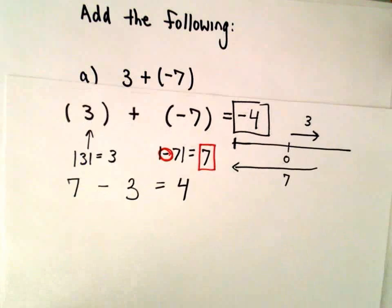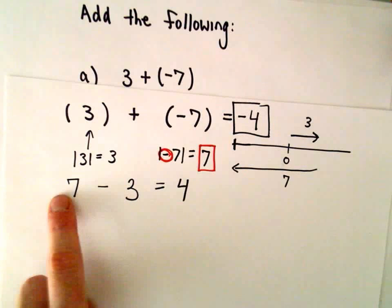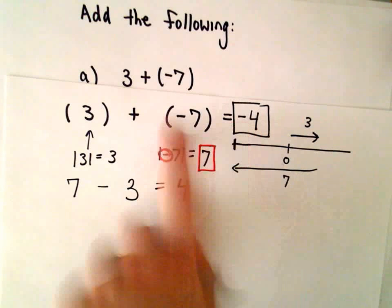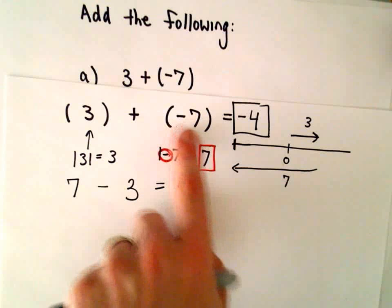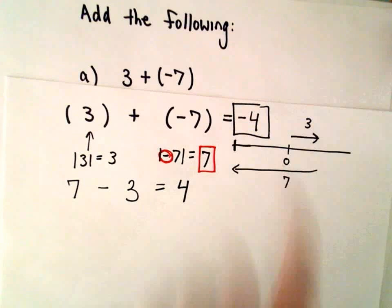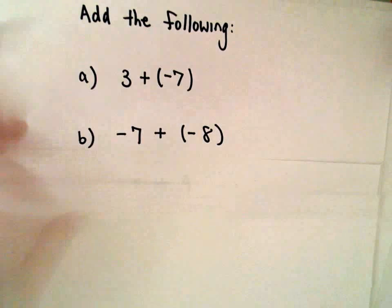So there's part A. So again, opposite signs, I make them both positive, bigger minus smaller. And then I think about the sign at the end, and I think, well, negative 7 is more negative than 3 is positive, so we're going to keep a negative number. There is part A.